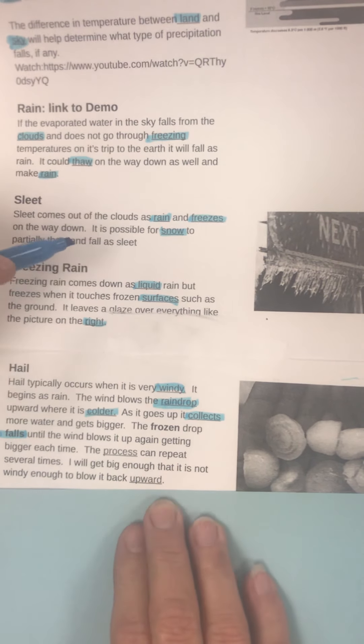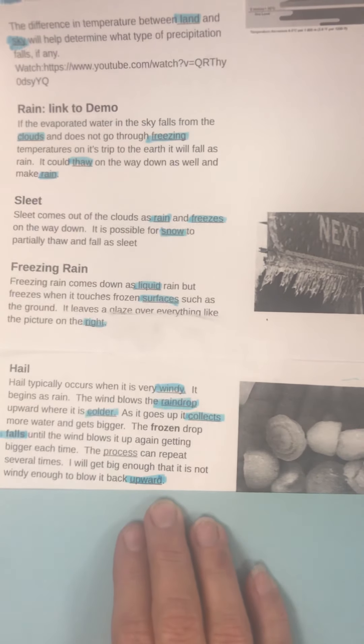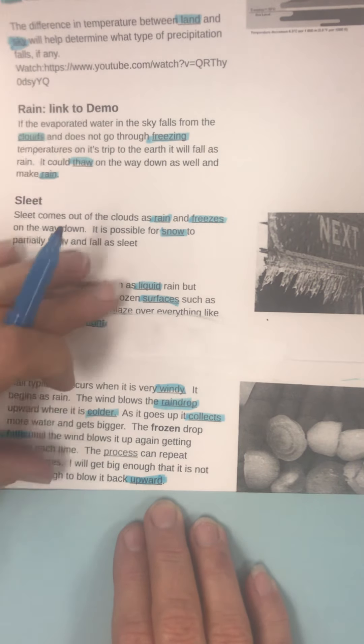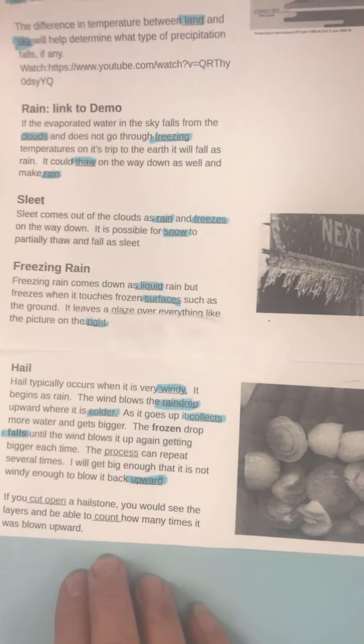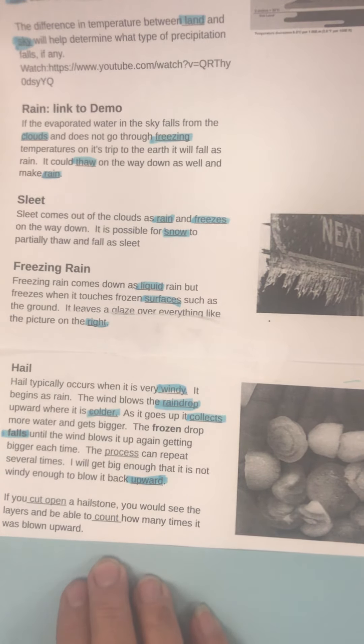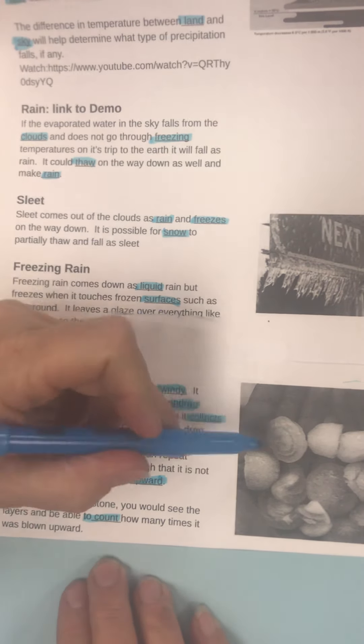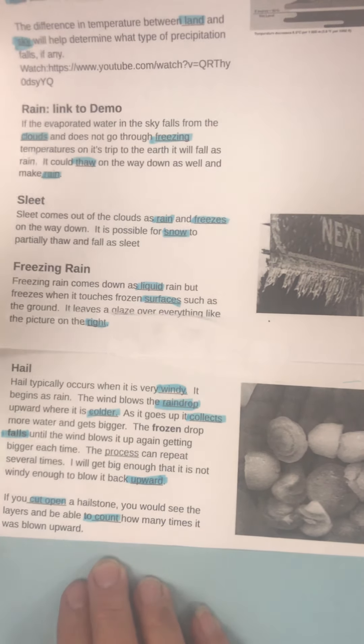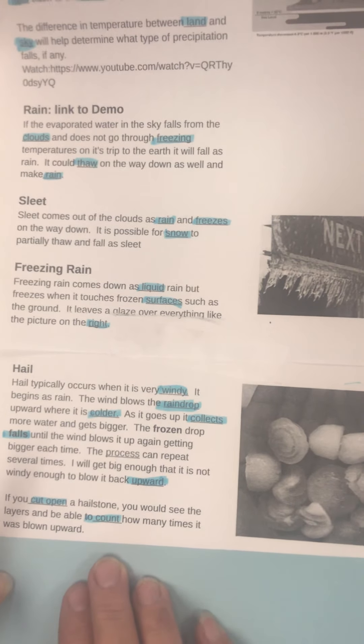It says, if you cut open a hailstone, you will see the layers and be able to count how many times it was blown upward. And you can actually see the layers in the picture of how many times it's been blown back up. Okay, so we will see how much time have we done here? Six minutes, we'll do a second.